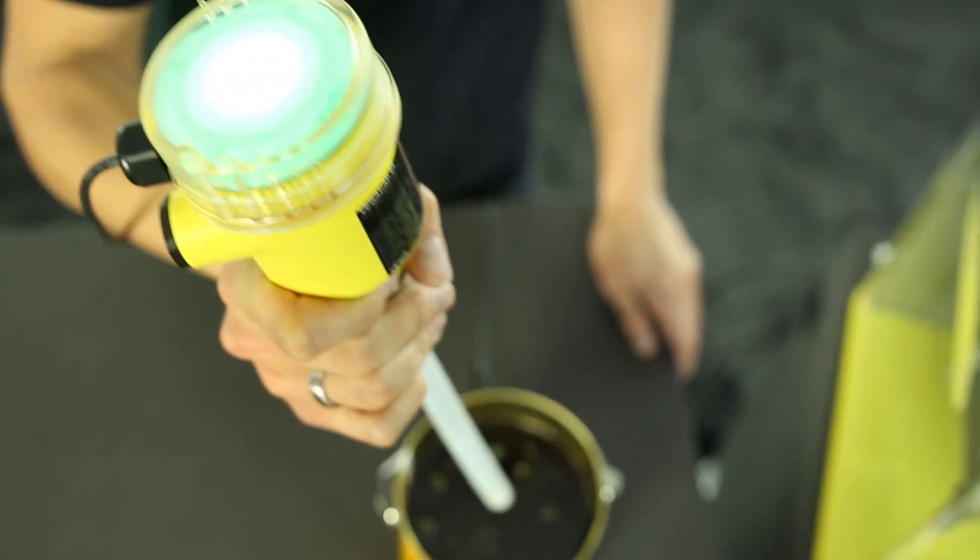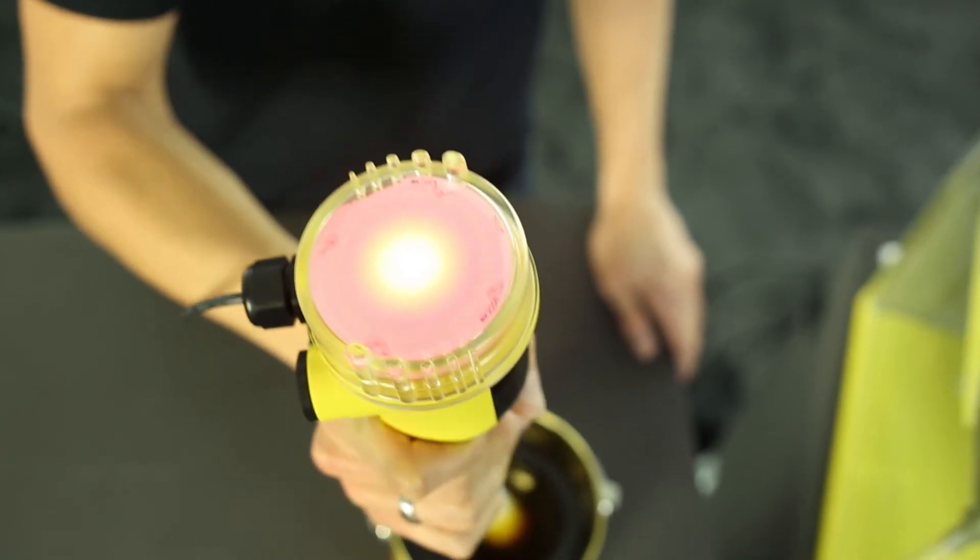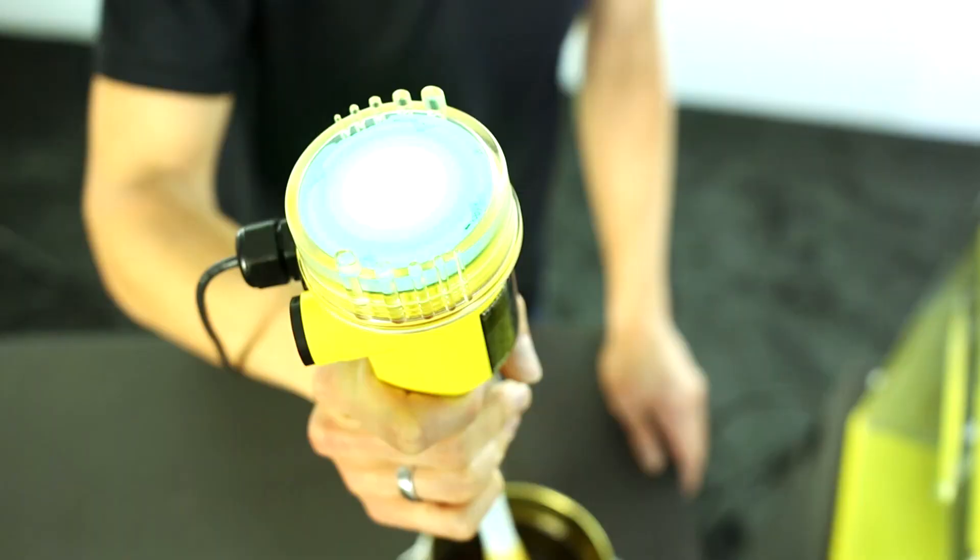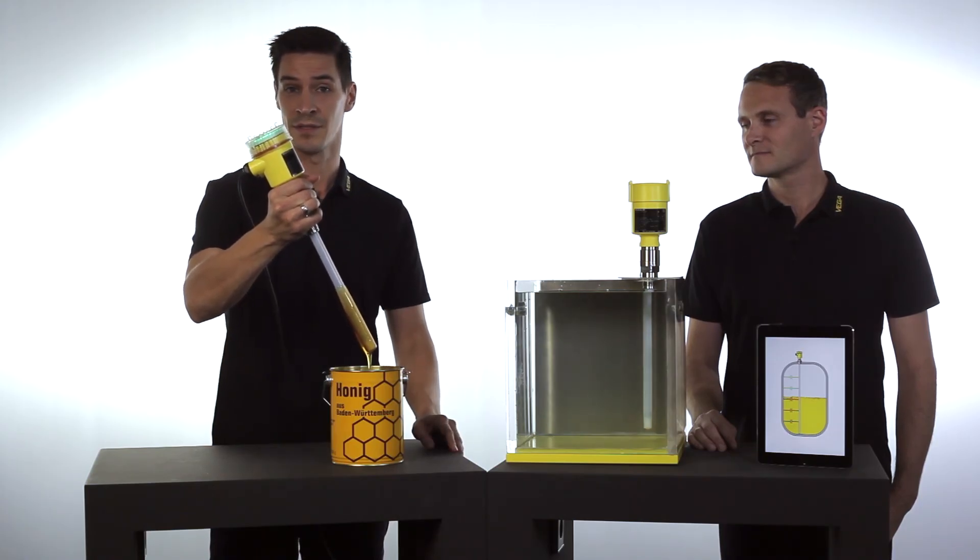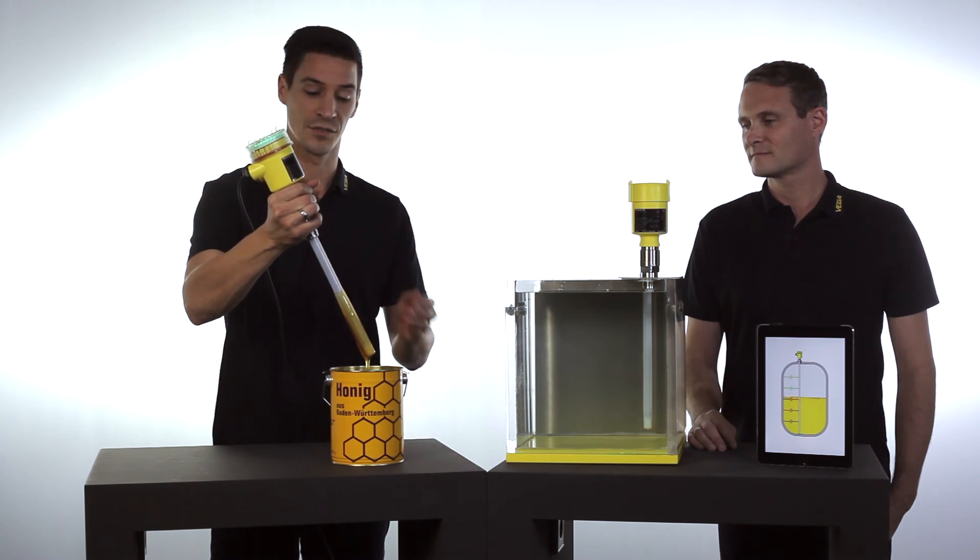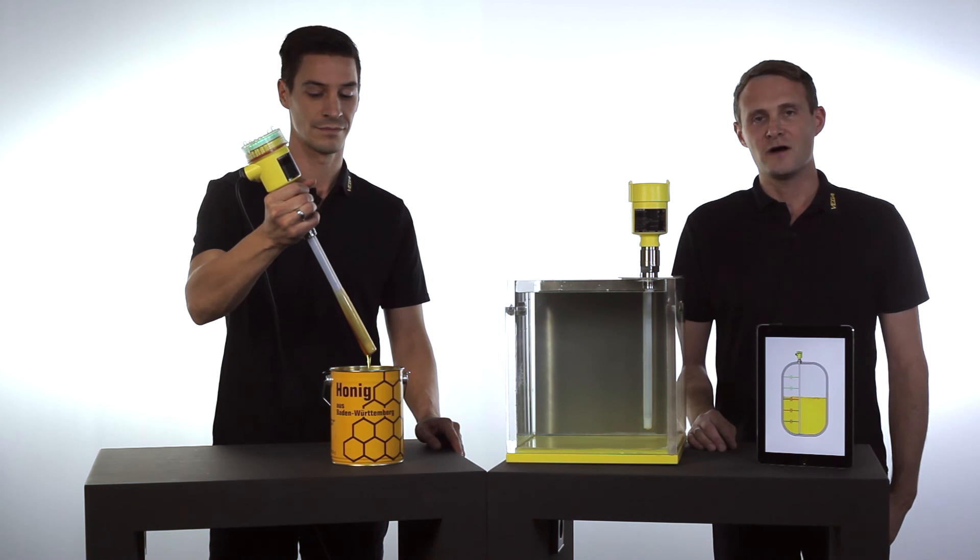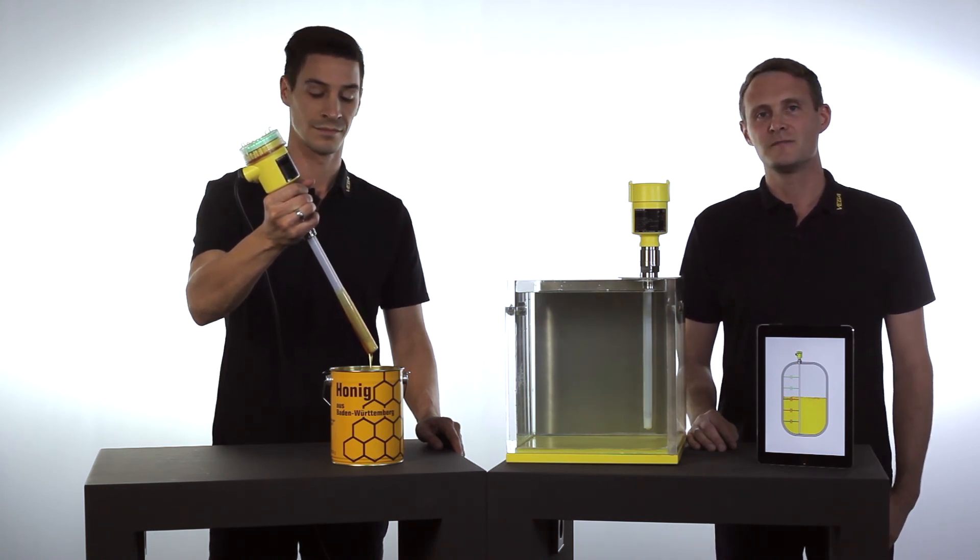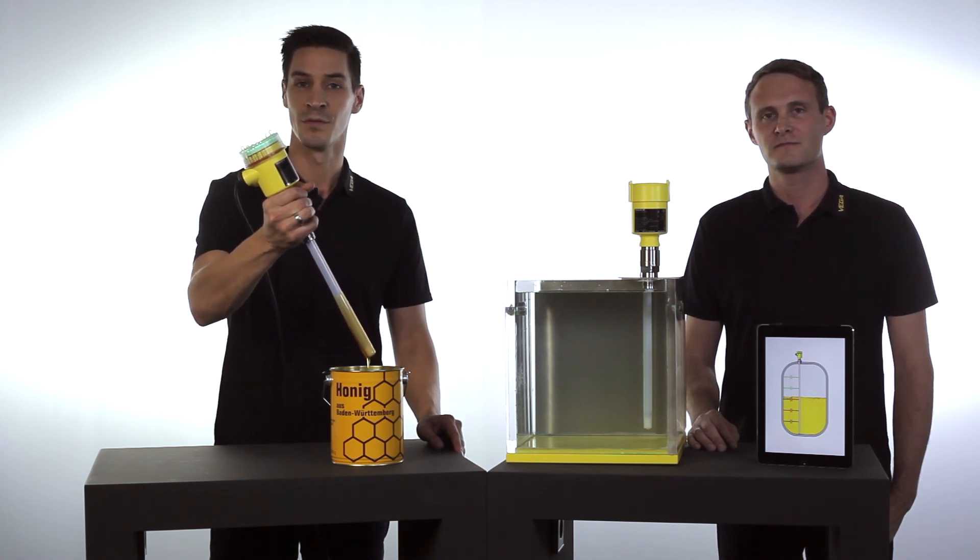As you can see, even these heavy build-ups don't affect the Vega Cup. It detects reliably if the probe is covered or uncovered. Fast, robust, and reliable even with heavy build-up: Capacitance Measurement Technology, Vega-Cal and Cup from Vega.